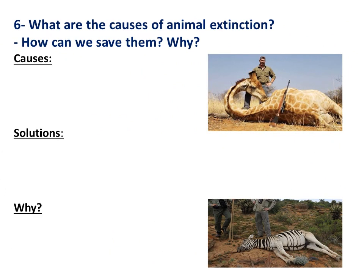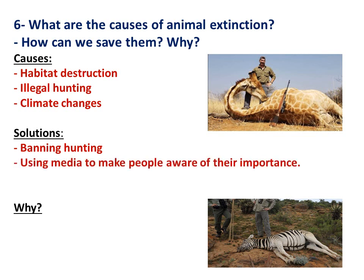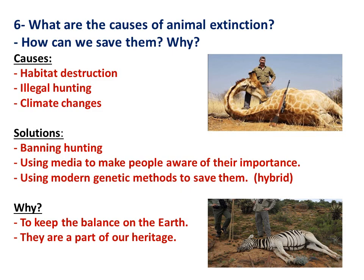Question 6: What are the causes of animal extinction? How can we save them and why? Causes: habitat destruction, illegal hunting, and climate changes. Solutions: banning hunting, using media to make people aware of their importance, and using modern genetic methods to save them like hybridization. We should save them to keep the balance on the earth and because they are a part of our heritage.